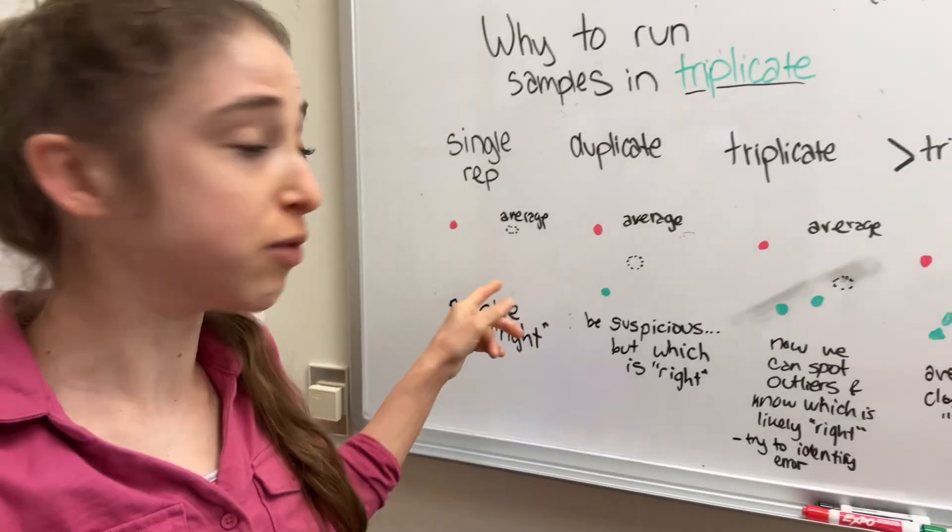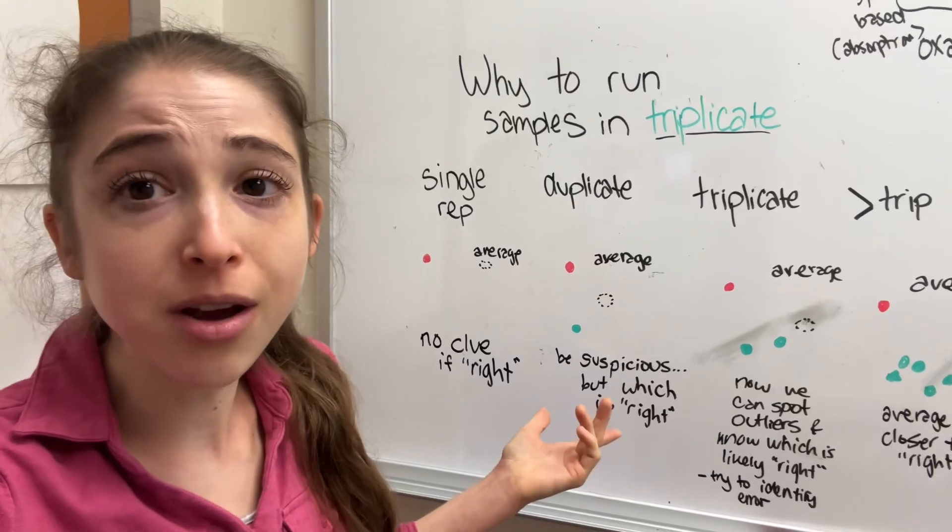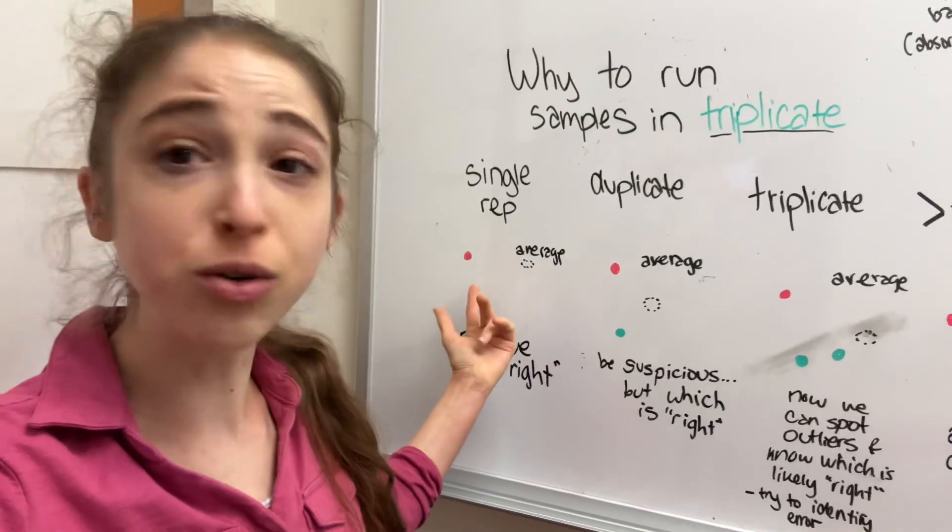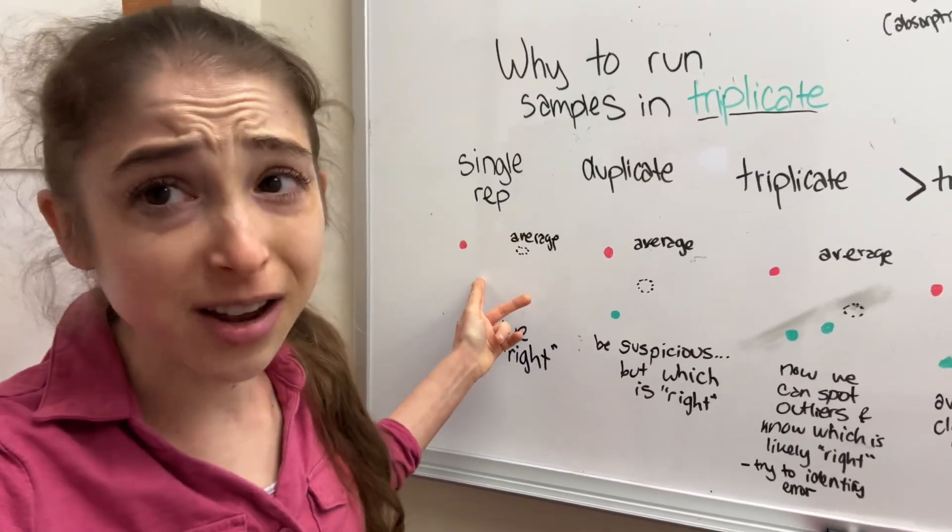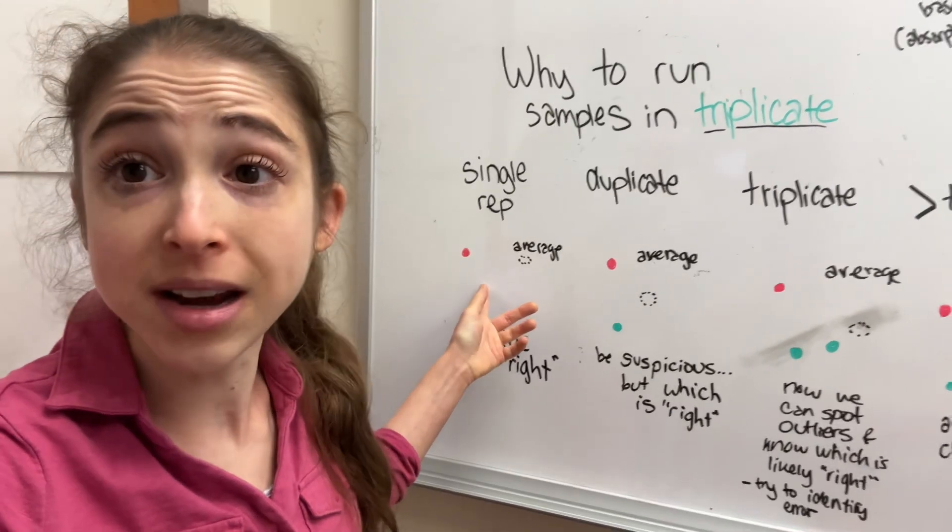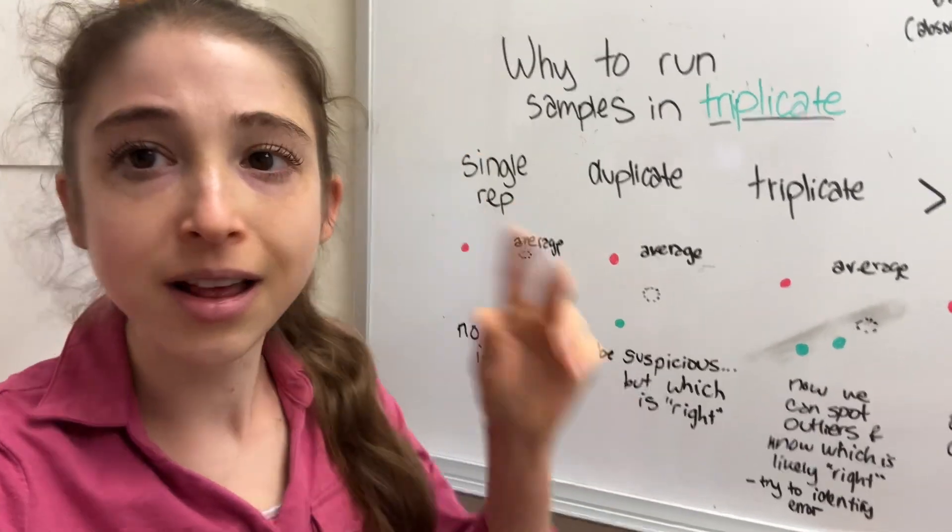If we only have a single replicate, so we have one sample, and we measure it and get some value, we have absolutely no idea if we can trust this value. It could be an outlier, it could be right, but we don't know.